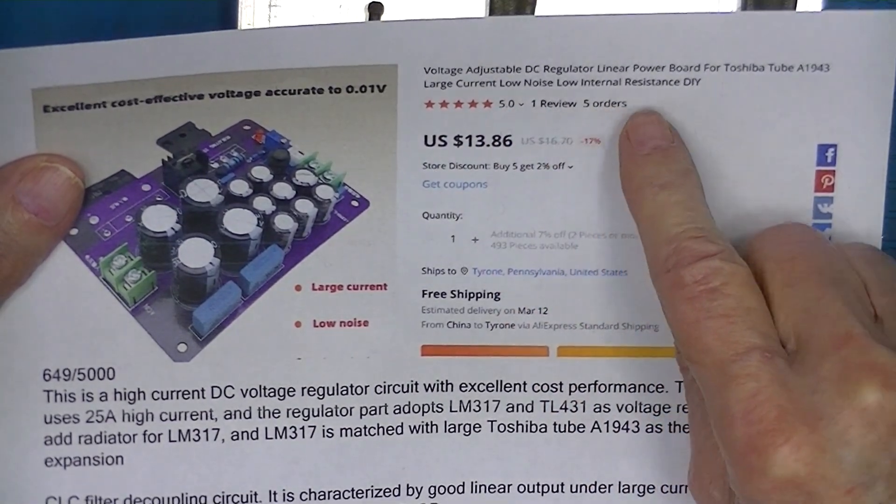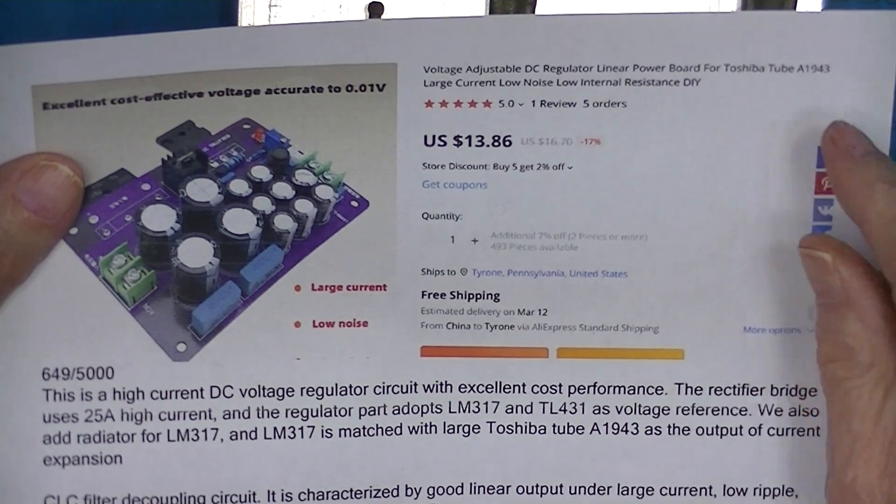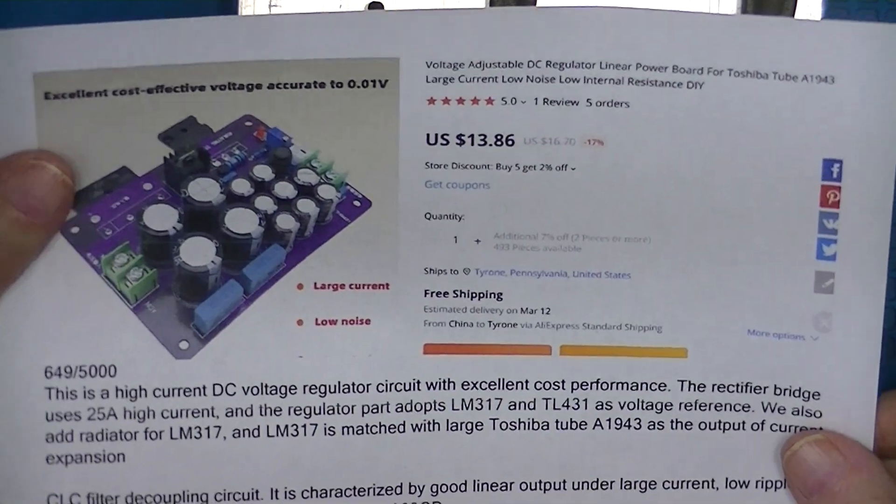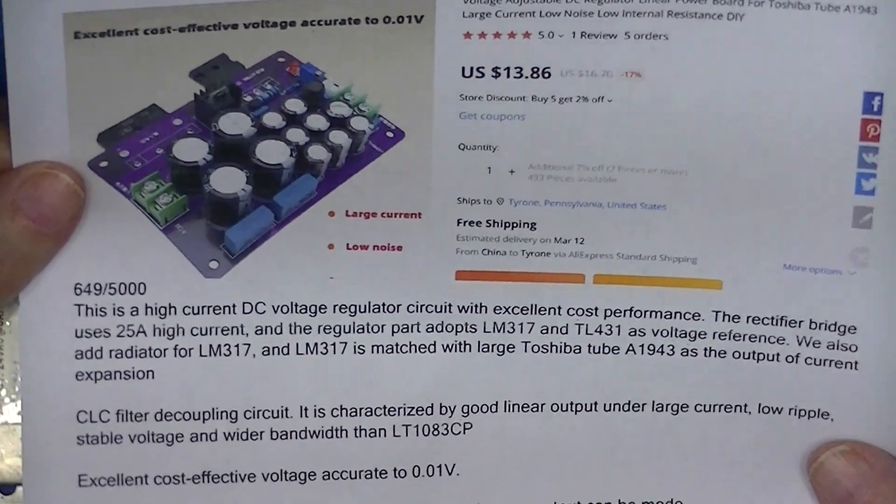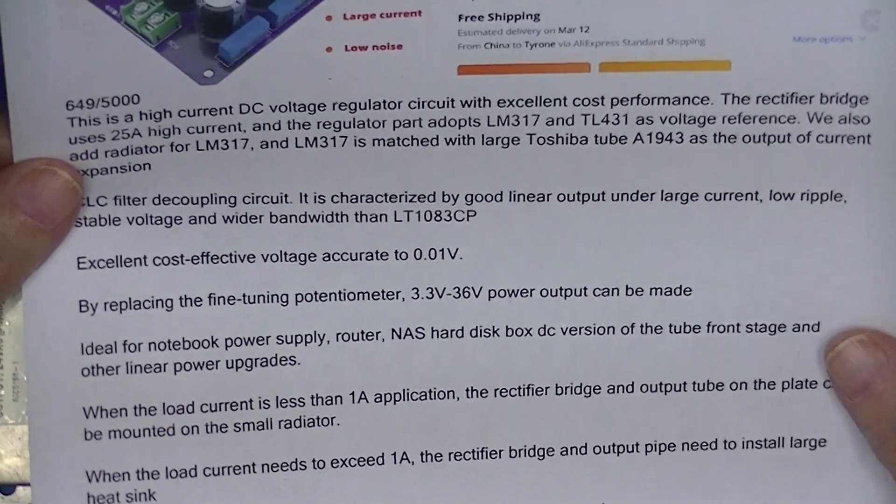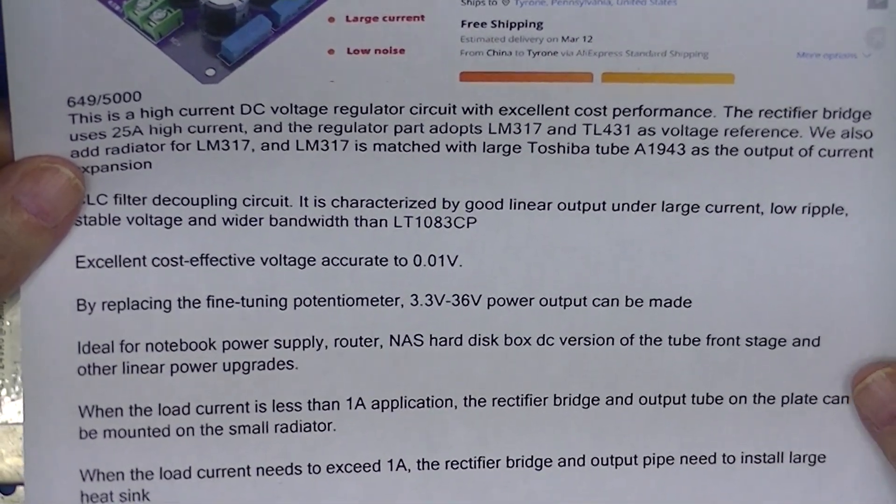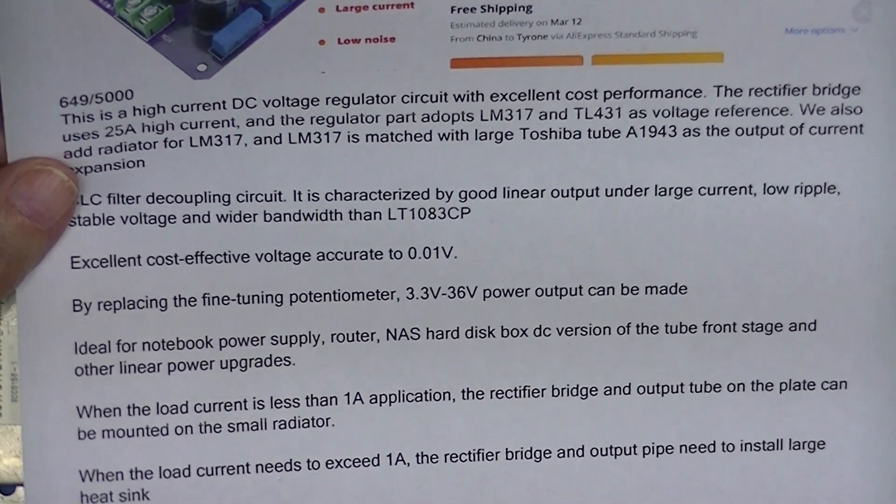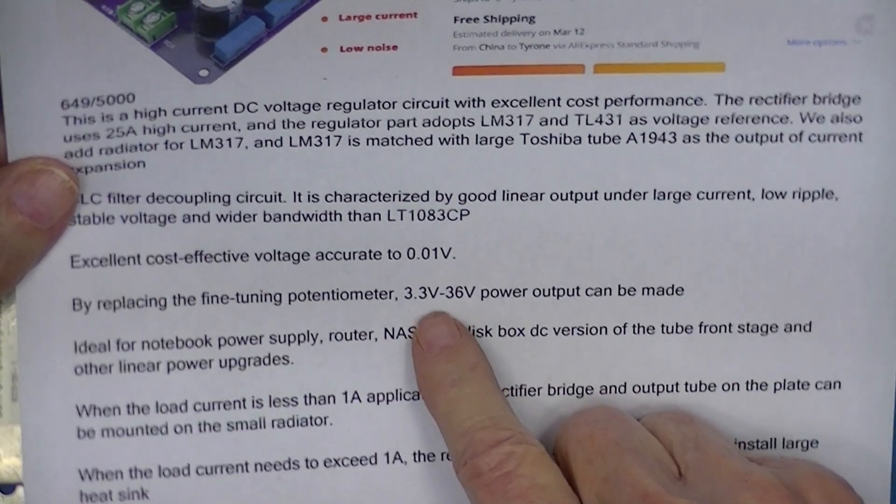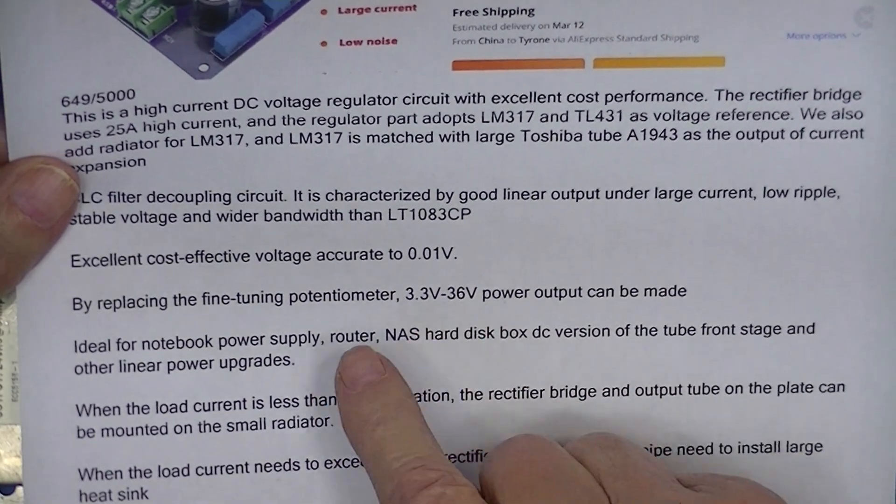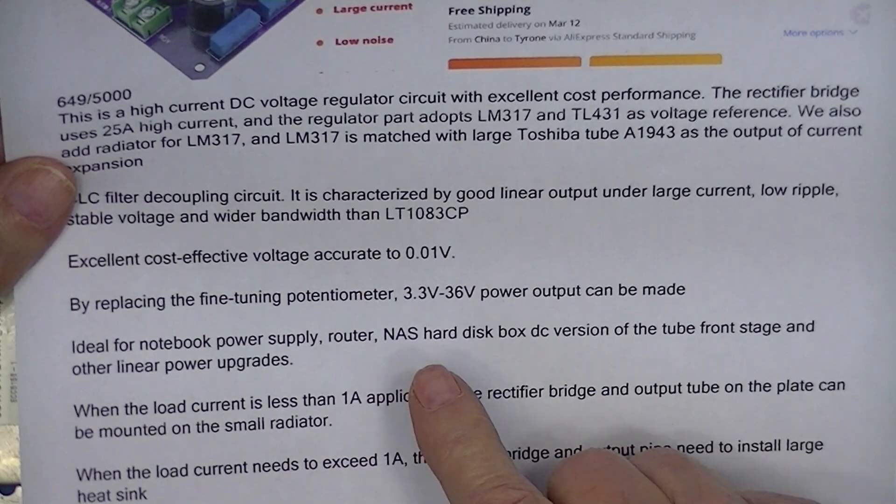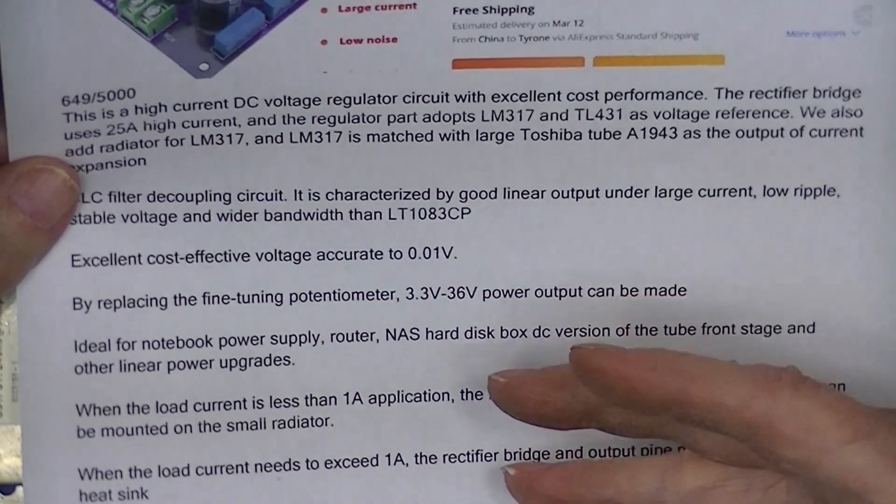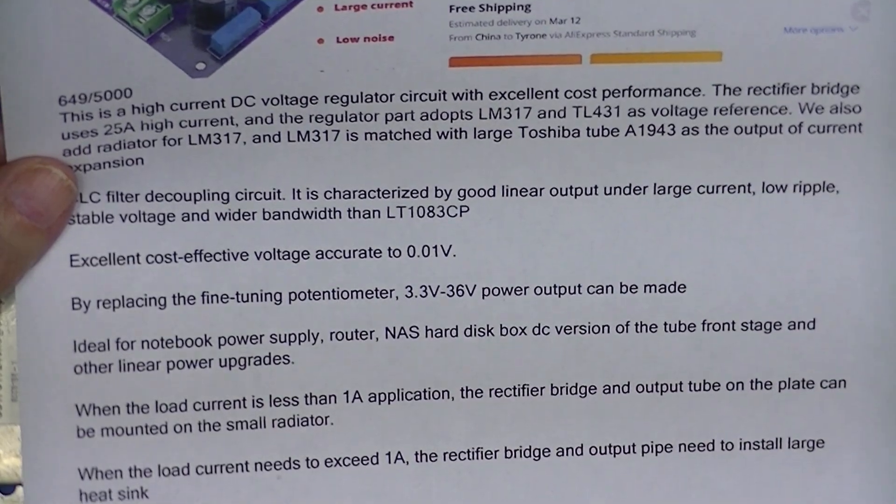The board itself came completely assembled and it makes some half-assed instructions here about what you can do with it. None of them are very clear. For example, it talks about having a range if you replace the fine-tuning potentiometer of 3.336 volts and there's no mention of current here.